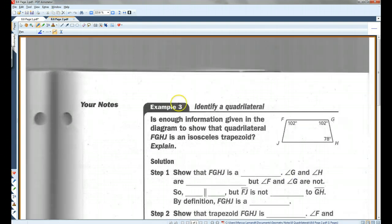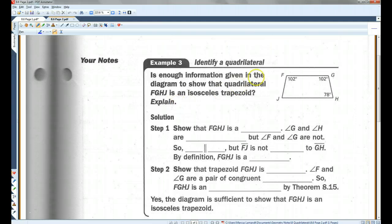All right. Is there enough information given in the diagram to show that quadrilateral FGHJ is an isosceles trapezoid? Explain.